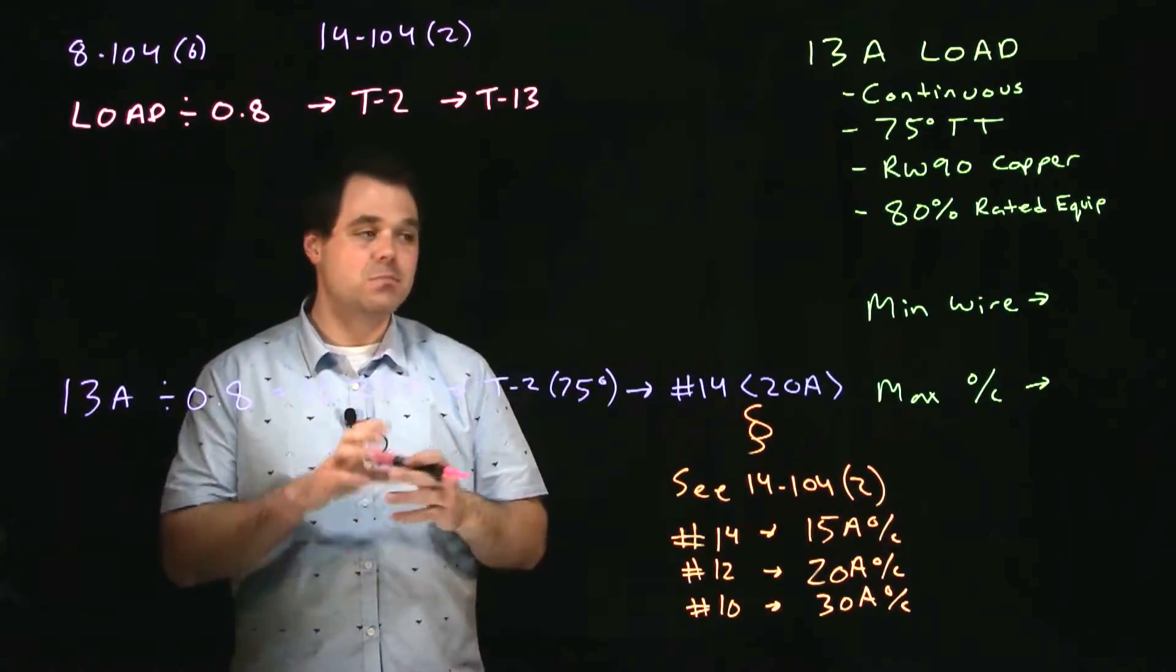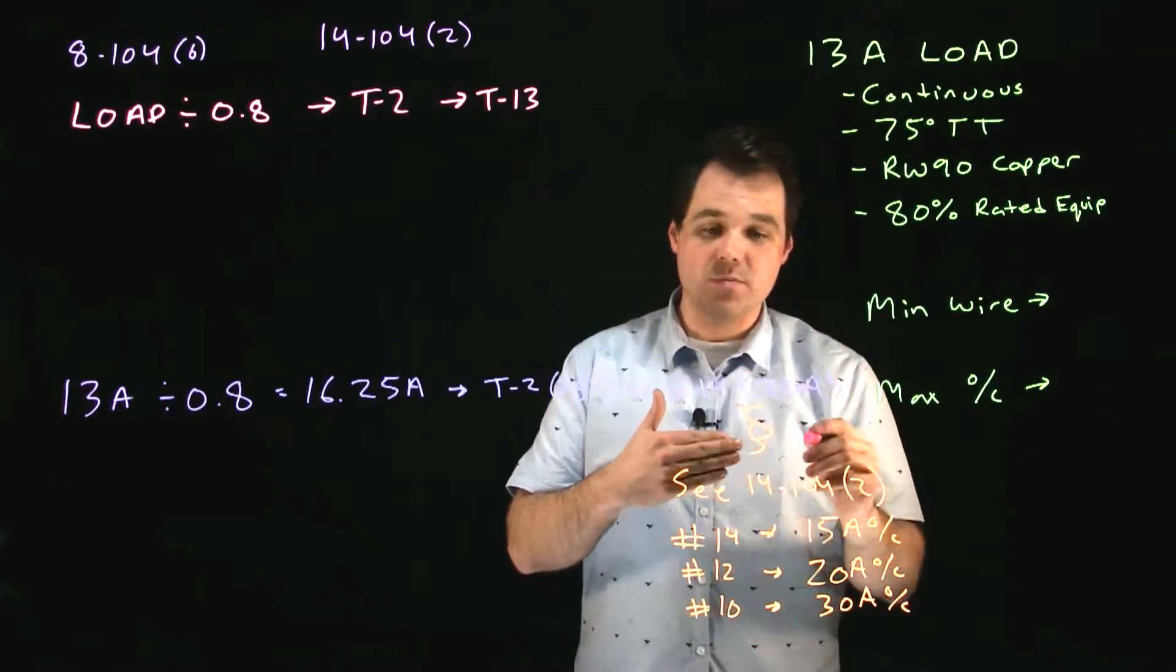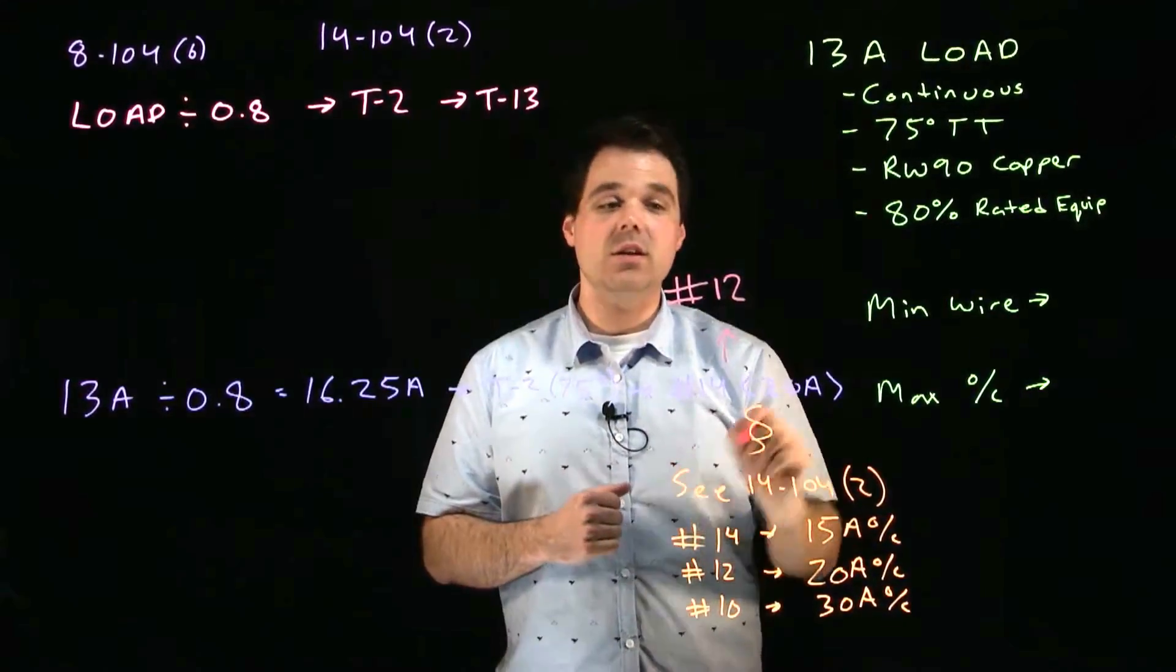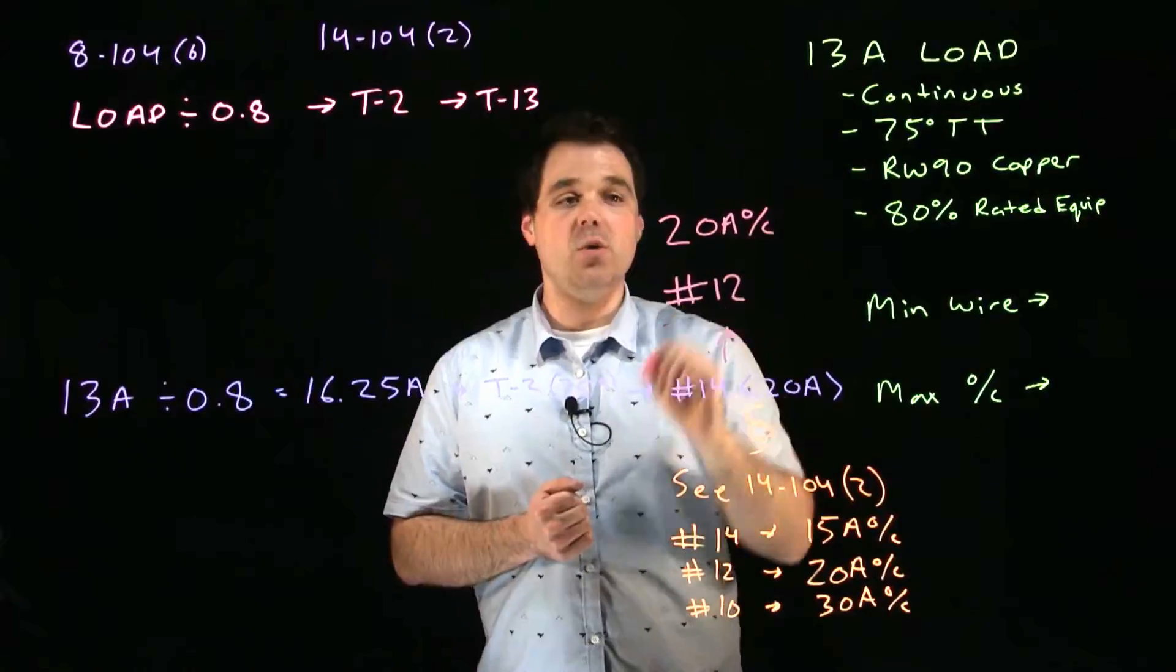So in this case because I need to upsize that breaker I am also upsizing my wire. Which means I have to upsize this to a number 12 gauge wire which is allowing me to use a 20 amp OC.